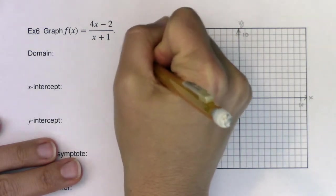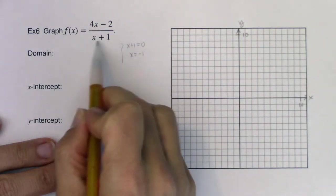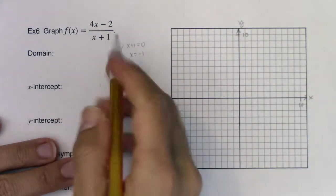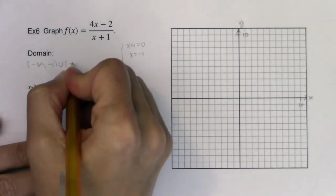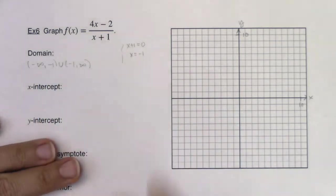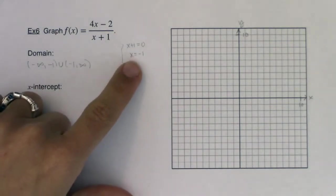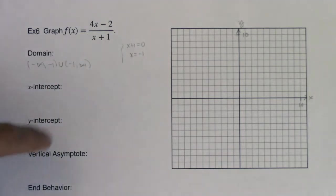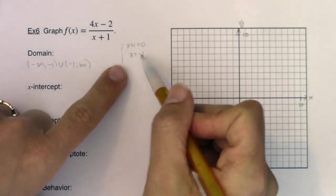So for my denominator being zero, I get x equaling negative one, which means I can't plug negative one into this function. So I need to boot it from my domain. And while I'm here, any time you have an issue with your domain, it will either turn into a vertical asymptote or a hole. And we haven't talked about holes yet.